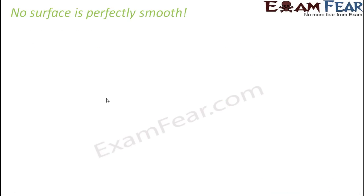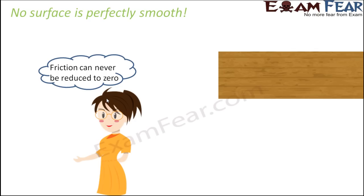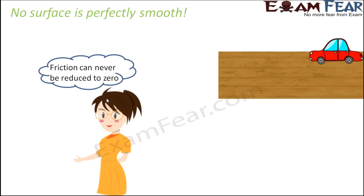Every time we talk about reducing friction, do you think we can reduce friction to zero? That is not possible, because for friction to be zero the surface would have to be perfectly smooth, which doesn't exist in reality. Friction can never be reduced to zero - even the most smooth surfaces that appear perfectly smooth have irregularities on their surface when observed minutely.